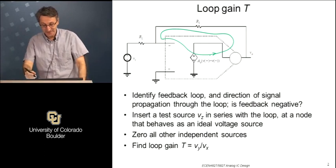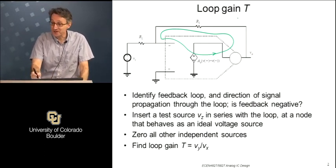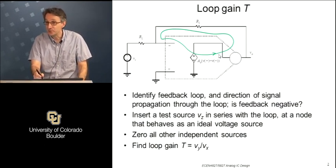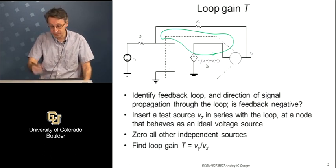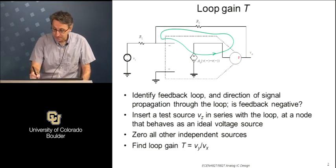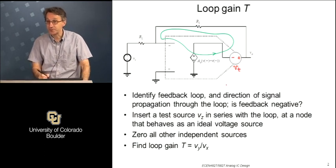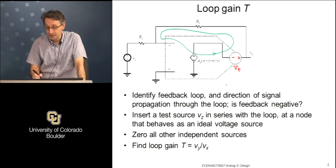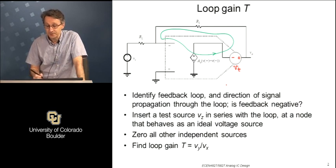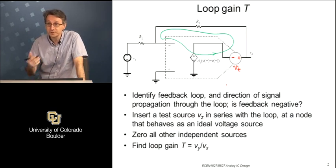The first step in finding the loop gain is to identify the feedback loop and direction of signal propagation through the feedback loop. Check that the feedback loop is negative. We've already done that for this example. Then we insert a test source - that's important. The test source V_z is inserted in series with the loop, and there is one other important factor: the placement of that test source is not entirely arbitrary.